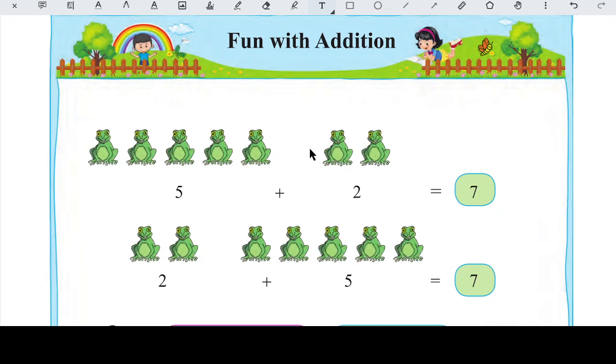Fun with addition. So yahan pe pictures di gayi hain frogs ki. So pehle hain 1, 2, 3, 4, 5, five frogs hain aur plus 2 frogs hain, aur 2, 1, 2. So angels, yeh 5 hai aur yeh 2 hai. So agar humein inhe add karna hai, inhe jodna hai 5 ke saath, to hum karenge 5 plus 2. So this is the sign of addition, yeh addition ka sign hai, yeh plus ka sign hai. So 5 plus 2 is equal to 7.